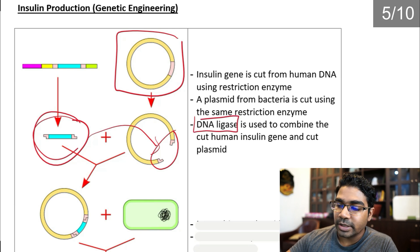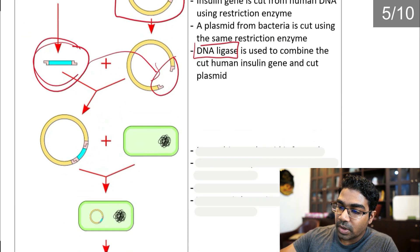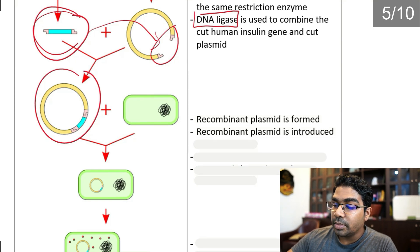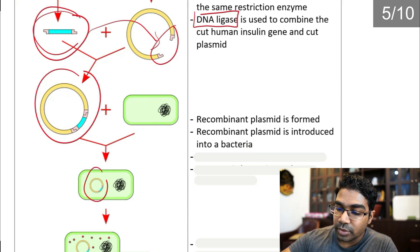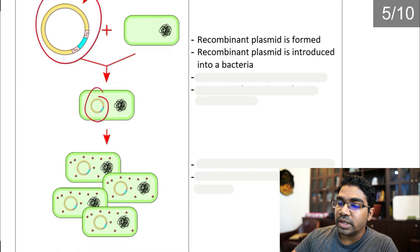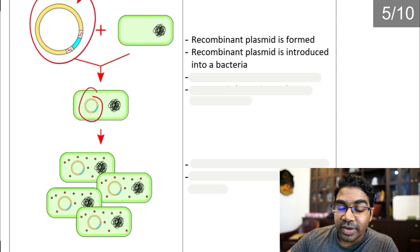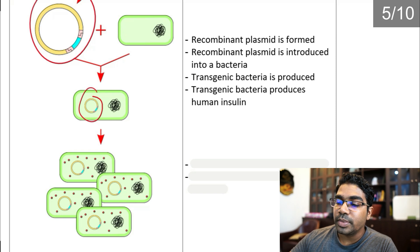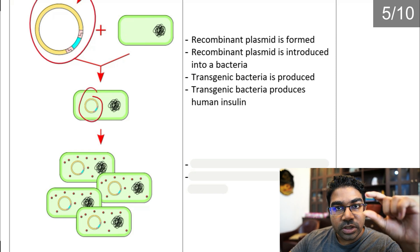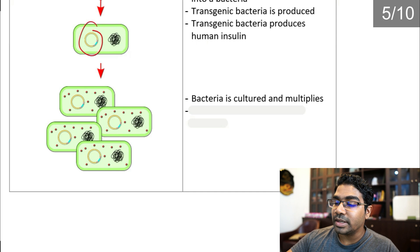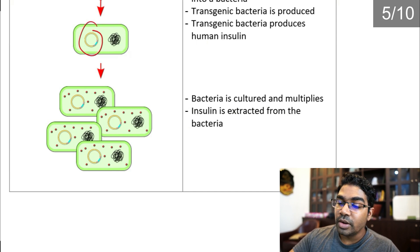DNA ligase acts like glue — it is used to combine the cut human gene and the cut plasmid, producing a recombinant plasmid. The recombinant plasmid is then introduced into bacteria. This recombinant plasmid contains the gene to produce human insulin, and as a result a transgenic bacteria is produced. This transgenic bacteria produces human insulin. The bacteria is then cultured, it multiplies, and insulin is extracted from the bacteria.